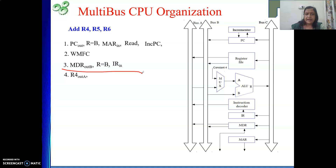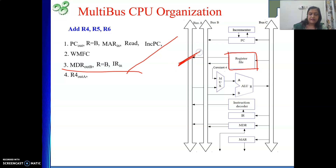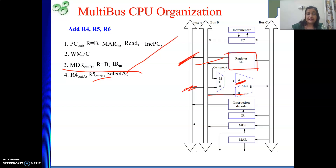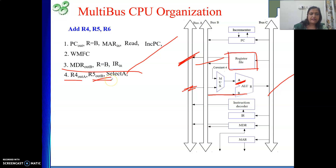Now we will start executing. The previous part is called instruction fetch and decoding; the next part is execution. What do we need to execute? We bring R4 and R5 to the ALU and then add. So we write R4 out A — from the register file, R4's content is placed on bus A. Then we place R5 content on bus B. Both inputs are available on bus A and bus B in the same clock cycle. Now to place the bus A content on the A input of the ALU, we write Select A.